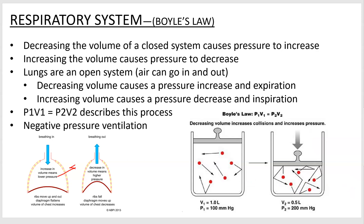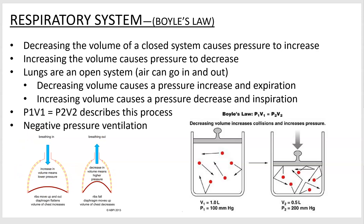When I increase volume by expanding my ribs or depressing my diaphragm, the pressure inside goes down. The atmospheric pressure outside stays the same, so air flows down into your lungs. Conversely, if I decrease that volume by relaxing my ribs and diaphragm, the pressure inside goes up and air blows out. We call this negative pressure ventilation — to get air in, you increase volume, which decreases pressure, and that pressure differential is caused by a negative pressure in the lungs.